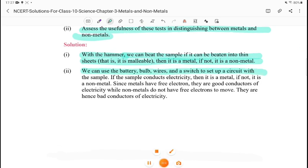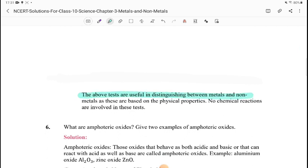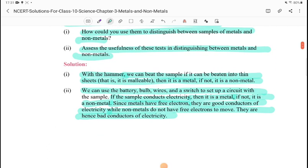Assess the usefulness of these tests in distinguishing between metal and non-metal. We can use the battery, bulb, wire, and switch to set up a circuit. If the sample conducts electricity, then it is a metal. If not, it is a non-metal. Since metals have free electrons, they are good conductors of electricity, while non-metals do not have free electrons to move. These tests are useful based on physical properties. No chemical reactions are involved.